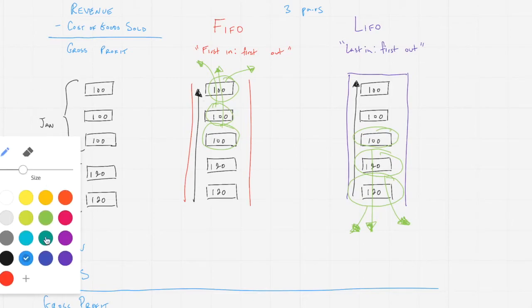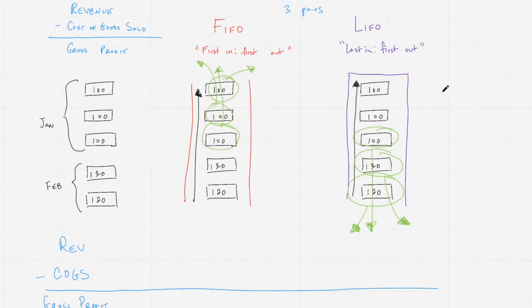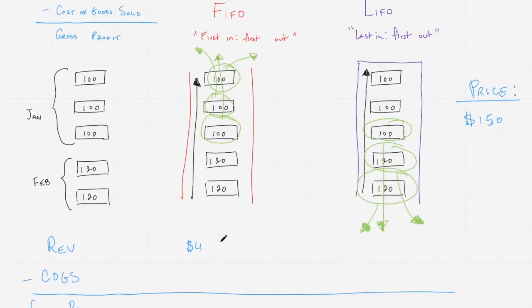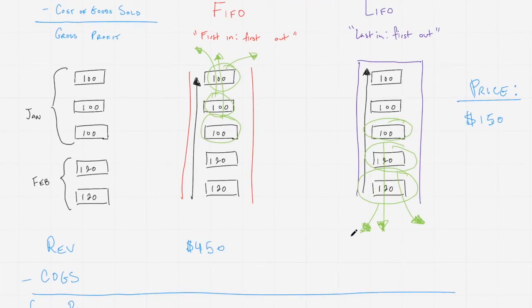Looking at this under each of these two methods, the revenue, let's assume, since we haven't made any assumptions yet about how much we're selling a pair for, let's just assume that we are pricing each pair of shoes, regardless of what it costs us to acquire them, at $150. If we're selling three pairs at $150 each to the customer, then that's going to be $450 in total revenue in both cases.